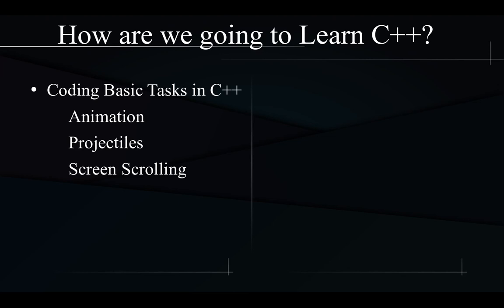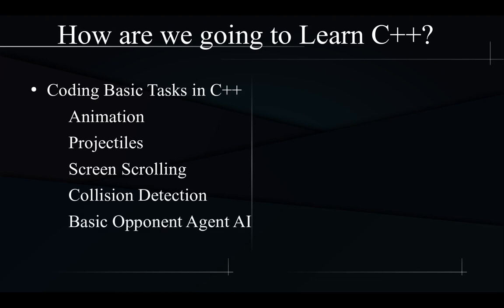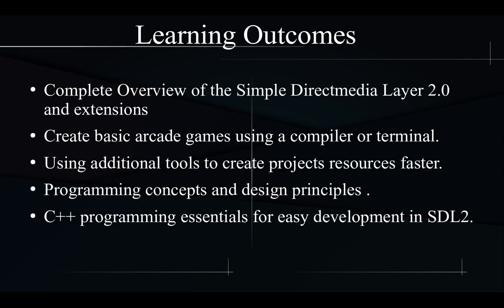Then we'll talk about basic collision detection and collision detection items. Hopefully by the end of the series, you'll know about some basic — not graph-based opponent AI such as chess and checkers — just basic AI, like an enemy moving back and forth on the screen. So hopefully by the end of the series, you'll have some experience using the compiler, using the terminal, and creating a basic fast project using the Simple Direct Media Layer, with some programming assistance.